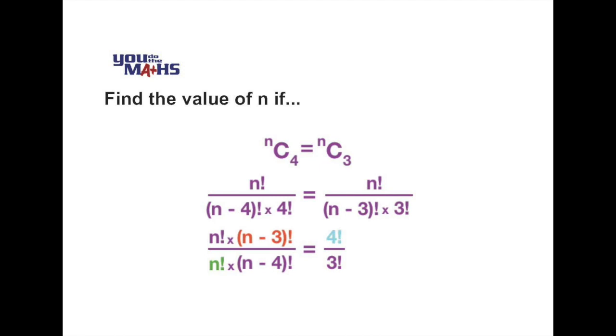So n minus 3 factorial in red has come from the denominator of the right hand side, we multiply that across. 4 factorial which is in light blue has come from the left hand side denominator, so we've multiplied that across. And we divided both sides by n factorial which appears in green on the left hand side of the equation.